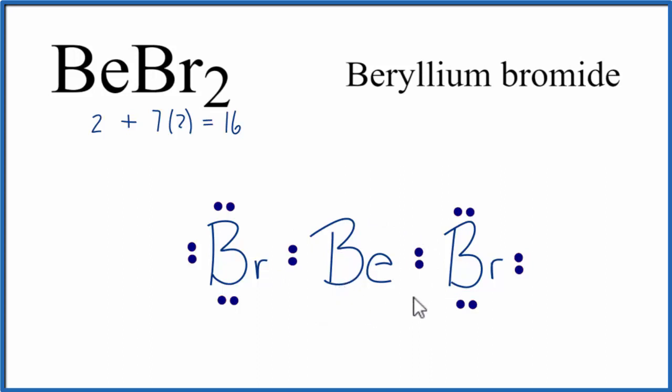So this is the Lewis structure for BeBr₂. You could suggest putting this pair of electrons here and here to form a double bond so everything has an octet. But if you calculate the formal charges, you'll find that this is not the most favorable or likely Lewis structure.